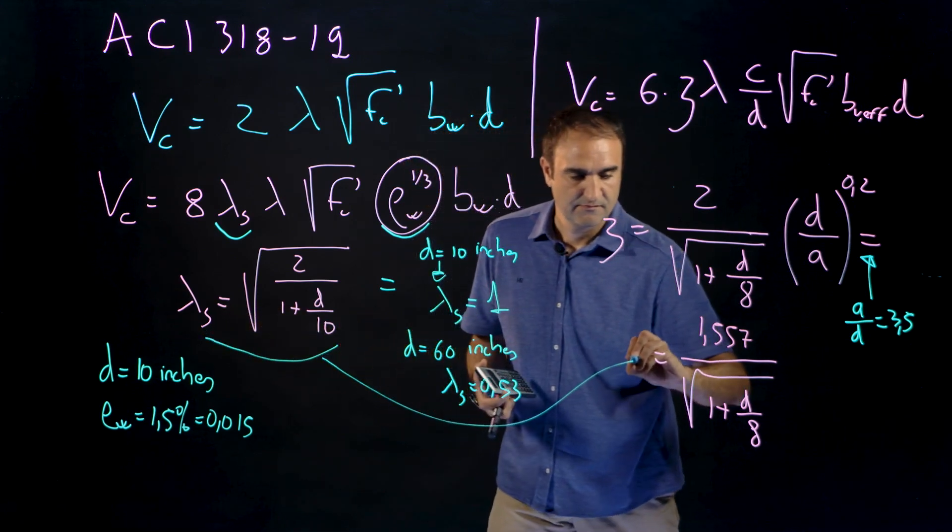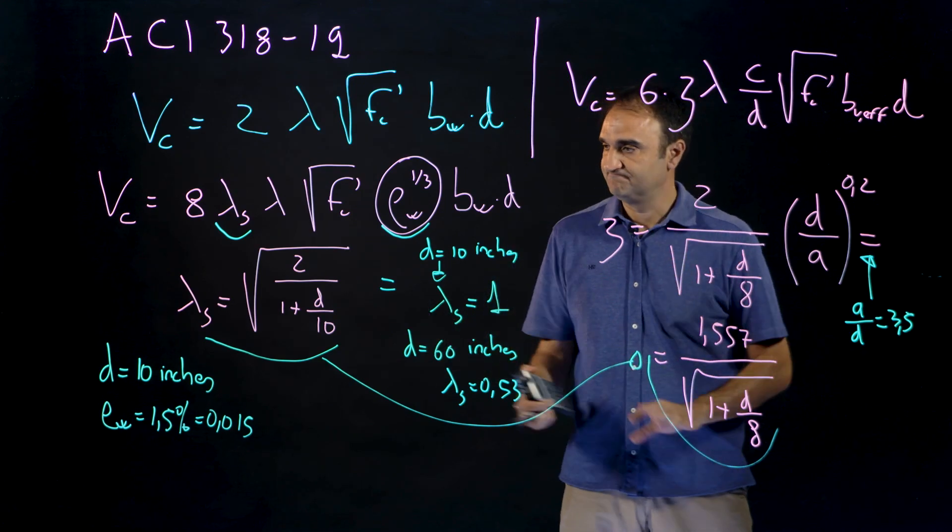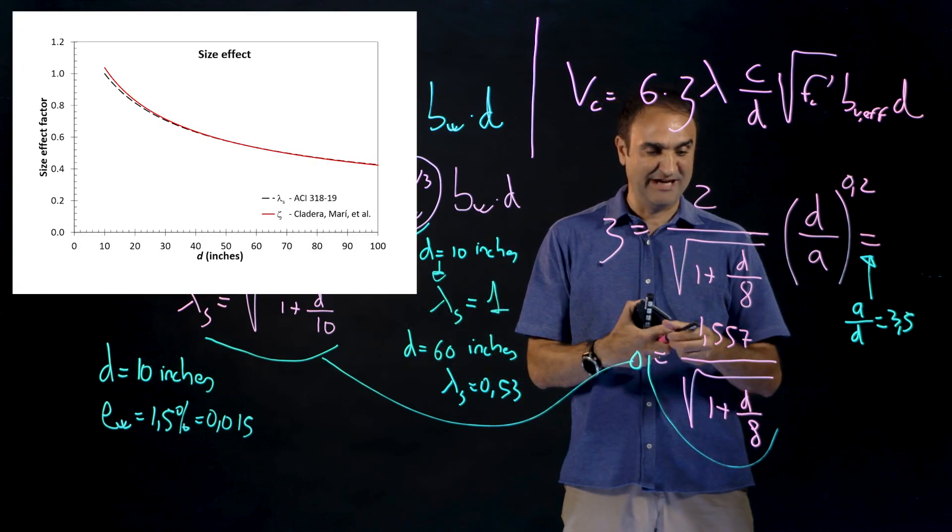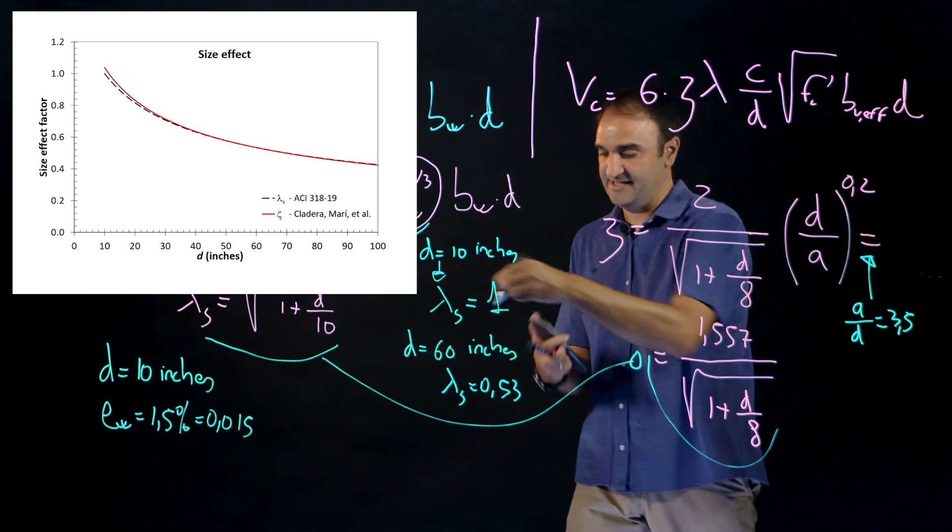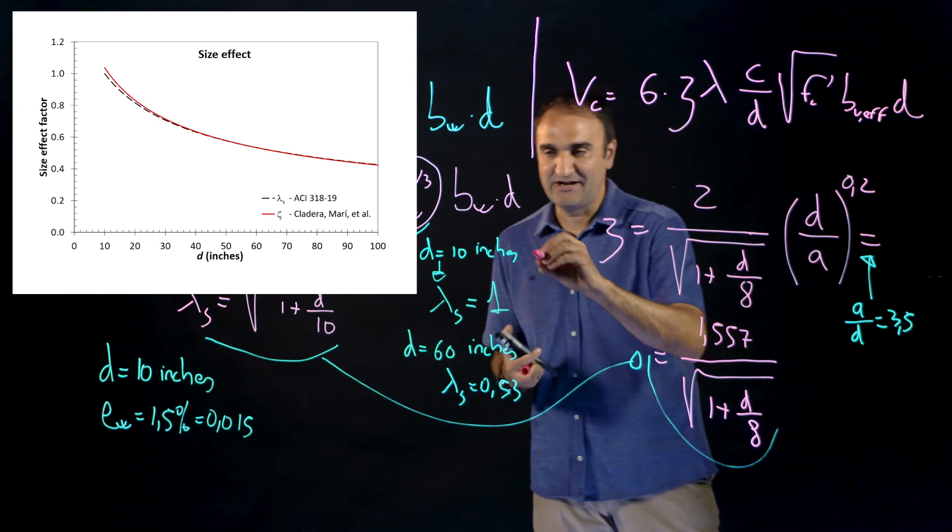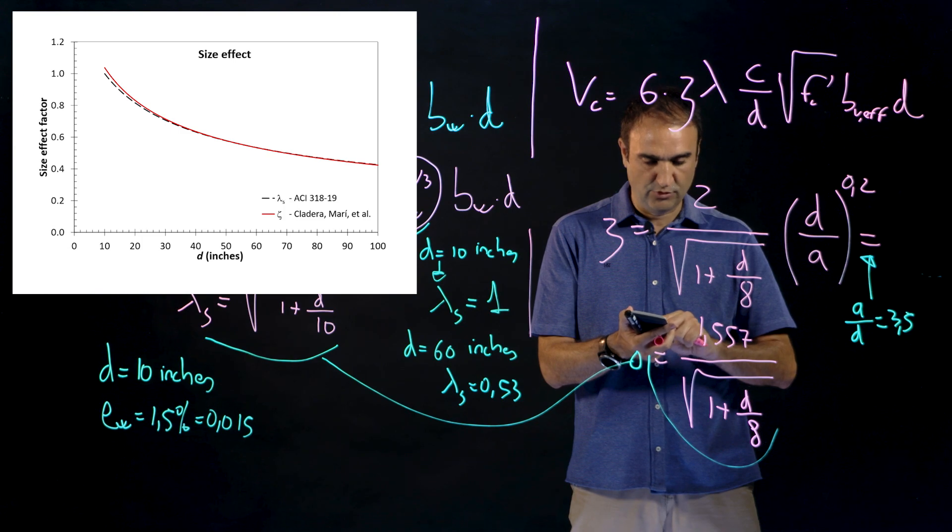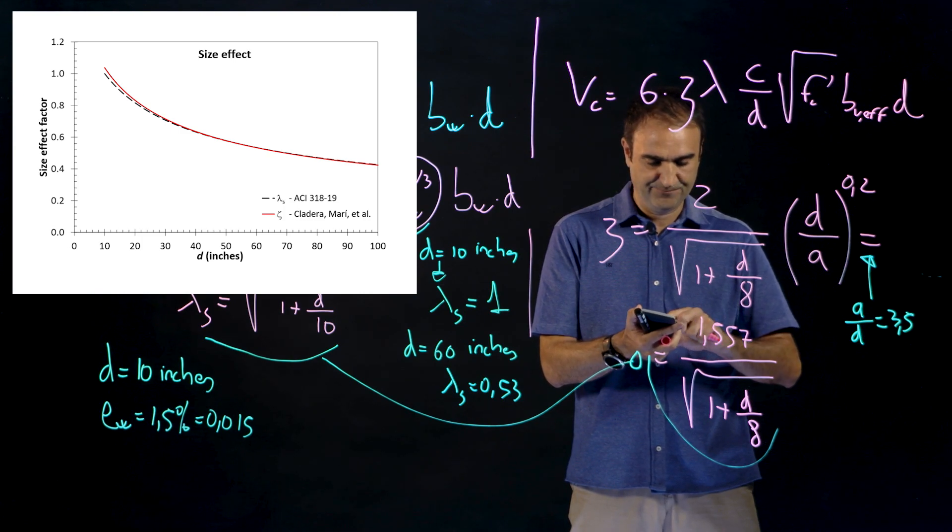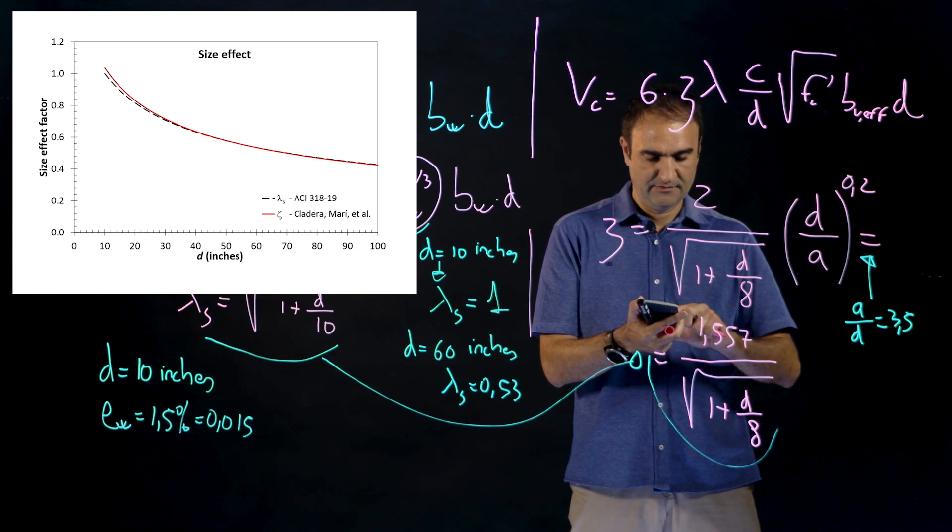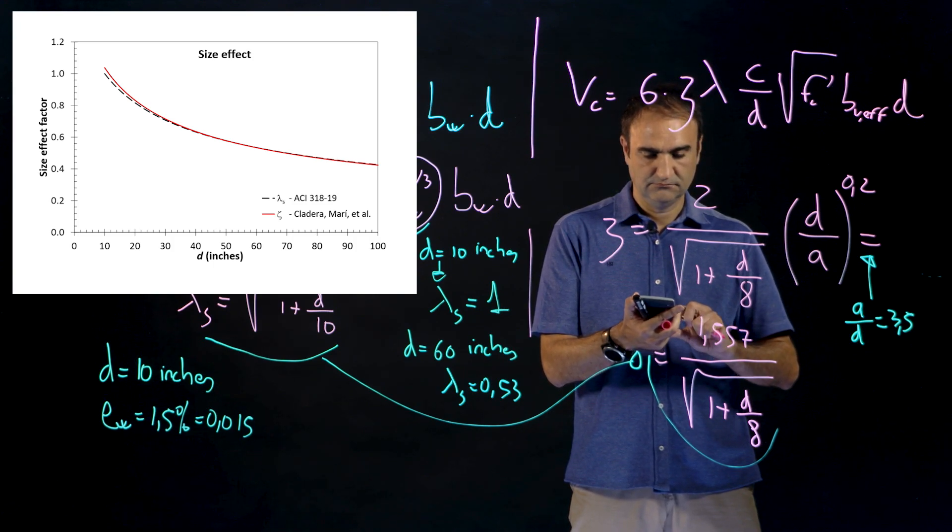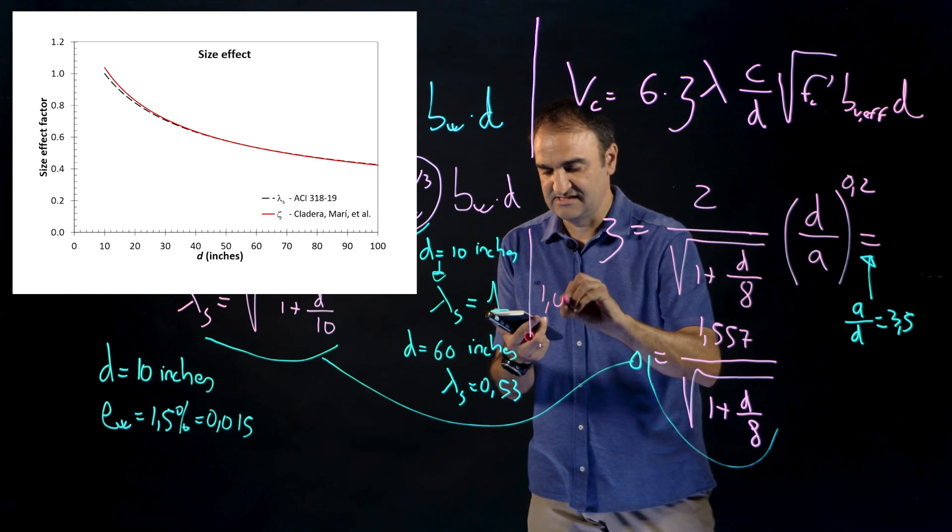1 over 8 and this equation here and this equation here are practically the same. You can make a graph with the two values and you will see for example for d equal to 10 inches, let's write here for 10 inches this would be 1.557 times the square root of 1 plus 10 over 8, this is 1.038.